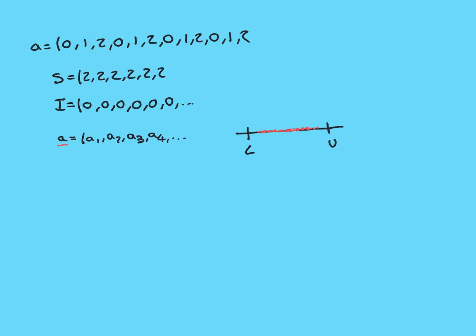Now, before we go on to proving that, I just want to talk about a class of sequences that are always guaranteed to have both a limit superior and a limit inferior — and these are bounded sequences. So let's suppose that our sequence A is a bounded sequence: A1, A2, A3, A4, etc. Bounded means that there is an upper bound and there is a lower bound — bounded above and bounded below. So there is some upper bound U such that everything in the sequence is less than or equal to U, and there is a lower bound L such that everything in the sequence is greater than or equal to L. So all the terms of the sequence are within the closed interval from L to U.